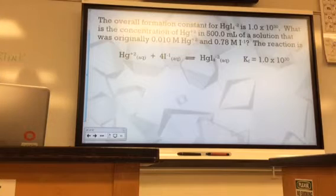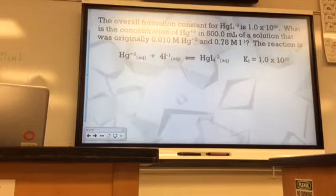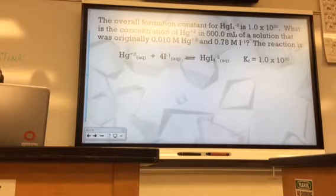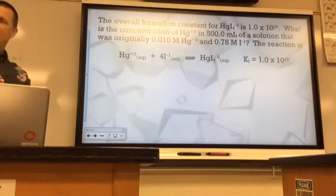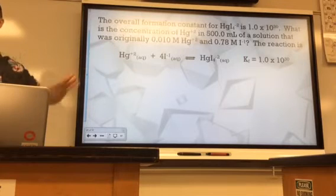All right. Let's take a look at this one. The overall formation constant. Now here's a new complex ion. Looks like this one's a pretty good complex ion. As you see its K value, check out that K value. It's got a formation constant of 10 to the 30th power. So very effective for dissolving mercury ions.